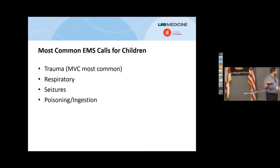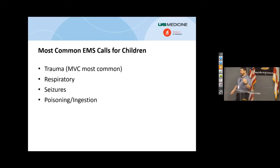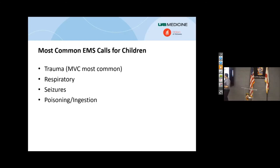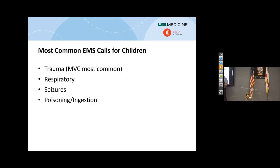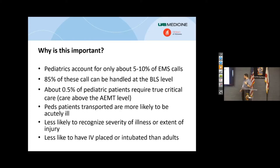The most common EMS calls for children: trauma is number one by far, and that's because it's also the number one thing that kills kids. Followed by respiratory, seizures, and ingestions. The reason this is important is that the final common pathway by which these kids all die is shock. Hypovolemic shock, respiratory issues causing hypoxia and hypoventilation creating acidosis leading to a shock state — seizures cause airway obstruction and disordered breathing. The things that really affect kids are shock-related in one form or another.